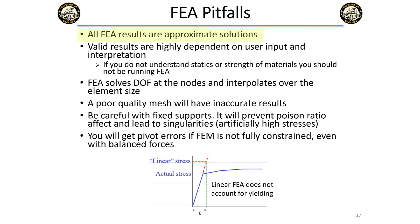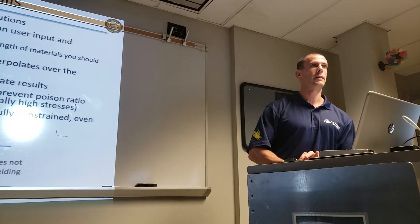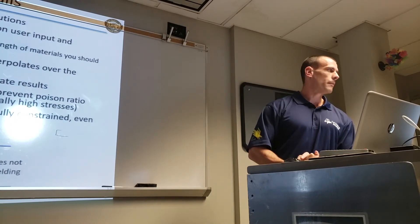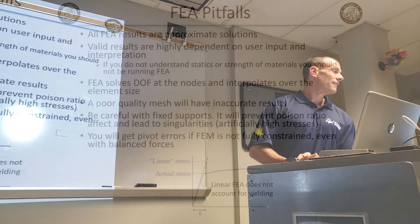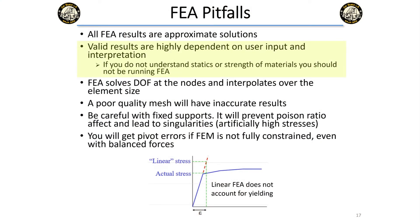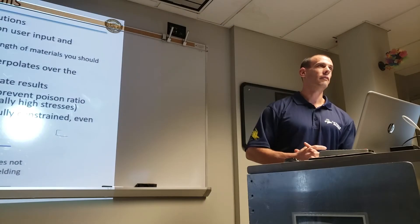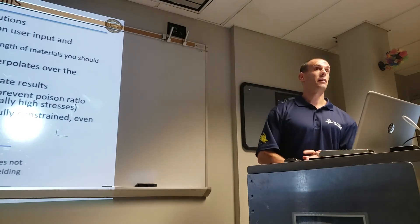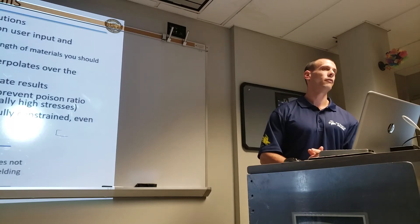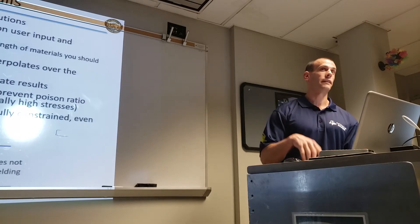Some downsides to FEA: they're all approximate solutions. You're approximating geometry, you're approximating displacements. The biggest problem with FEA is that valid results — something useful and close to correct — are highly dependent on user input and your interpretation. Just like with the I-beam example: you might say the I-beam is going to fail because of the high stresses, but it's actually at a corner that never fails in any physical test. It's your interpretation of what FEA is giving you.